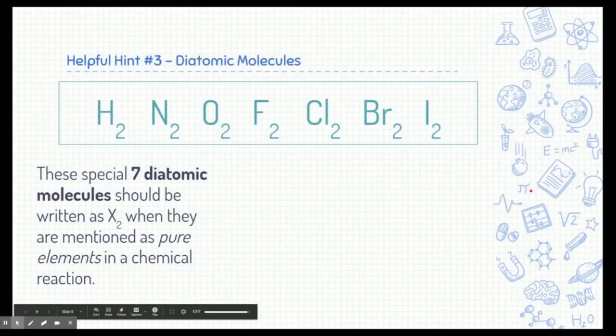The third helpful hint is all about diatomic molecules. Now, we briefly learned about these before. Mostly, we just wanted you to memorize which of the molecules were diatomic. You can even use your periodic table and make a little note on which ones are diatomic. Now, these are special molecules that whenever you see them as pure elements in a chemical reaction, they have to have a little subscript of two, and they're the only ones that do that naturally when they're pure elements.